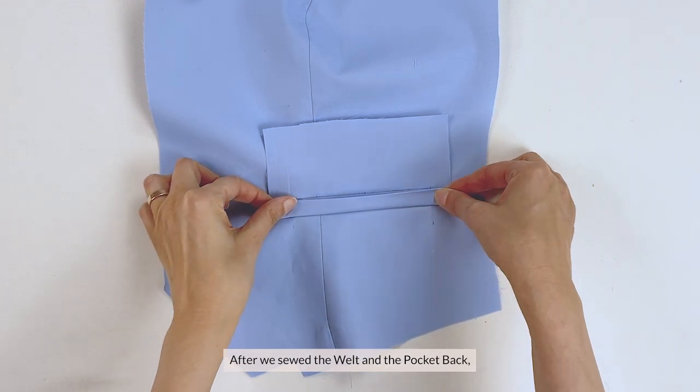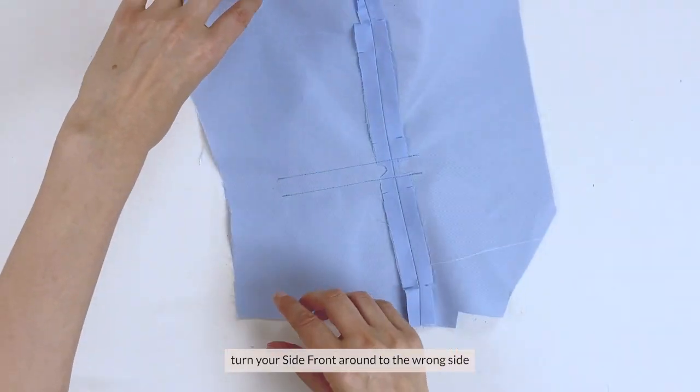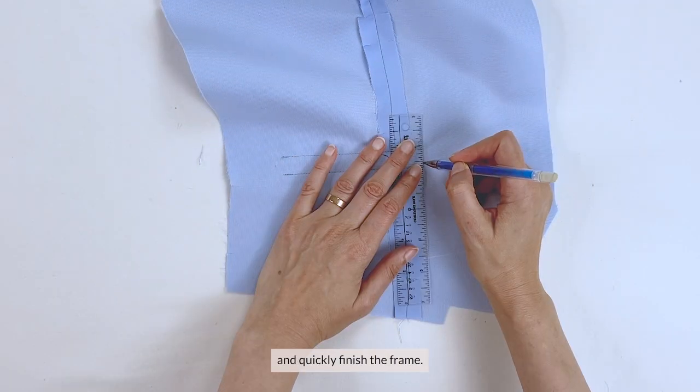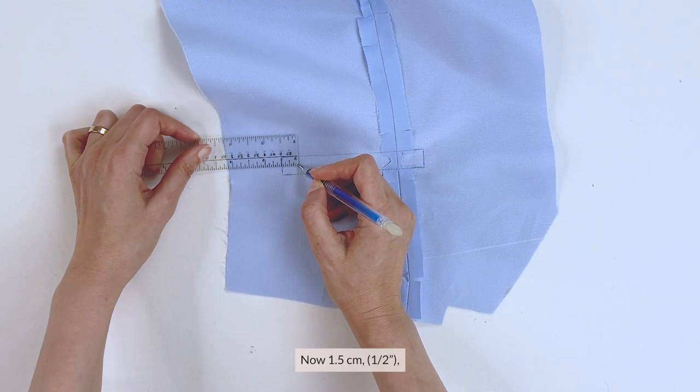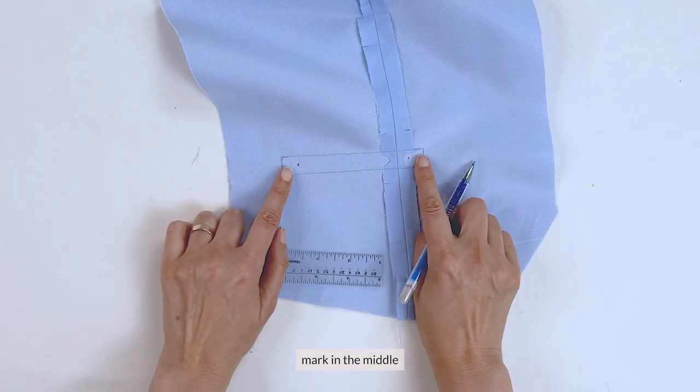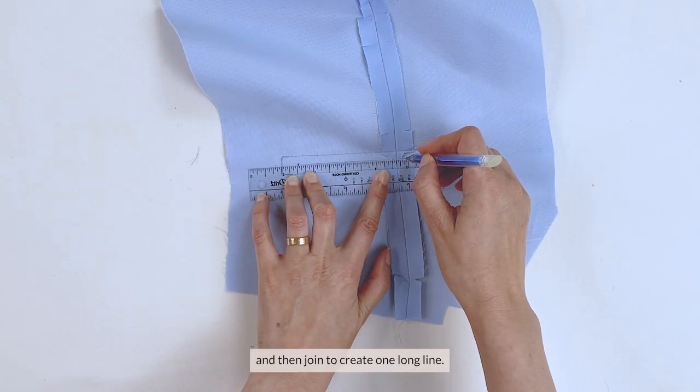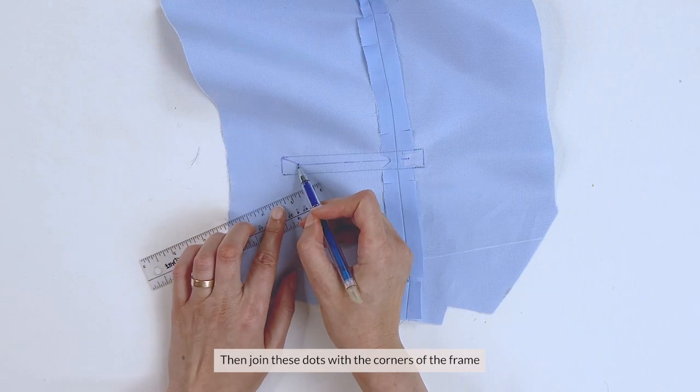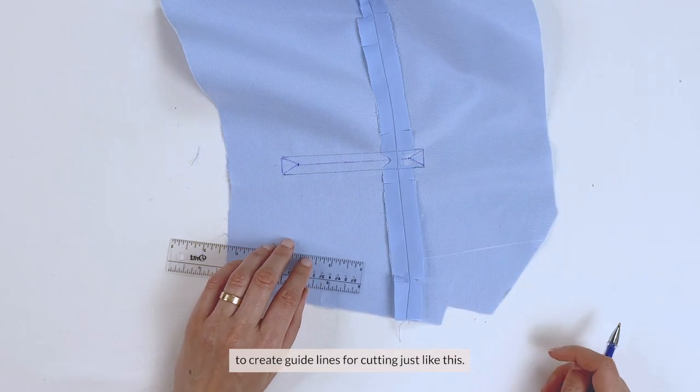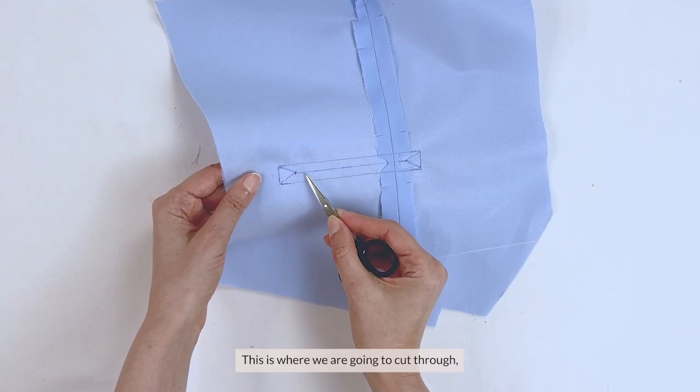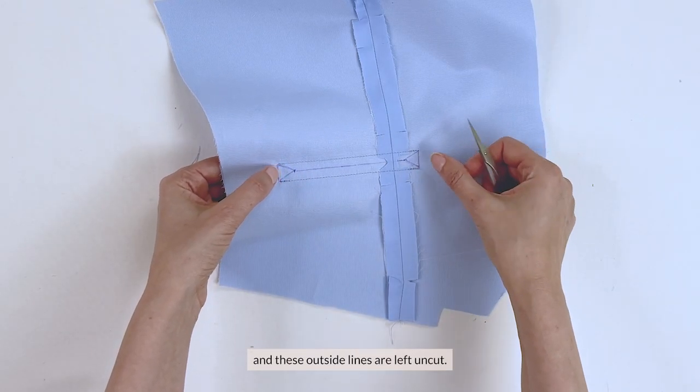And after we sewed the welt and the pocket back, turn your side front around to the wrong side and quickly finish the frame. Now 1.5 cm or 1.5 inch from each edge of the frame, mark in the middle and then join to create one long line. Then join these dots with the corners of the frame to create guidelines for cutting just like this. This is where we're going to cut through. And these outside lines are left uncut.